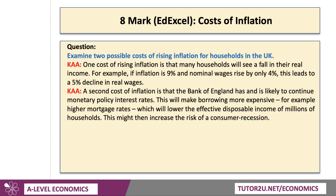A second cost of inflation is that the Bank of England has and is likely to continue raising monetary policy interest rates. This will make borrowing more expensive — for example, higher mortgage rates. Those people who take out a home loan will see a lower effective disposable income. Effective disposable income is income after tax and benefits, but also after those big unavoidable payments like the mortgage bill, which cut into your effective disposable income.